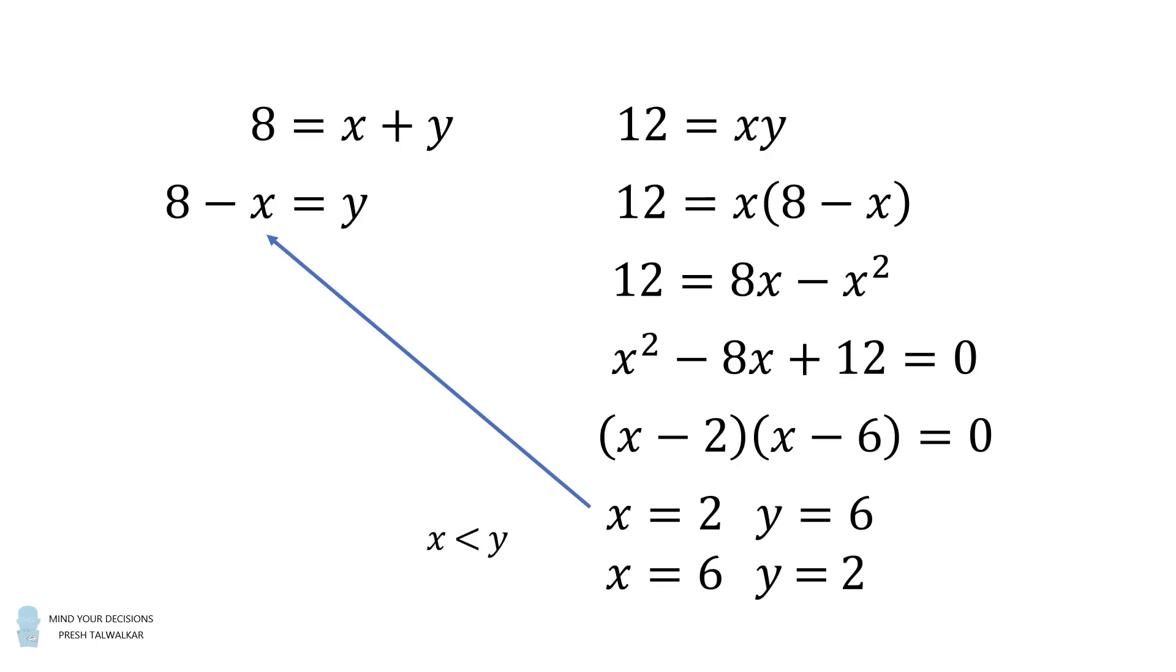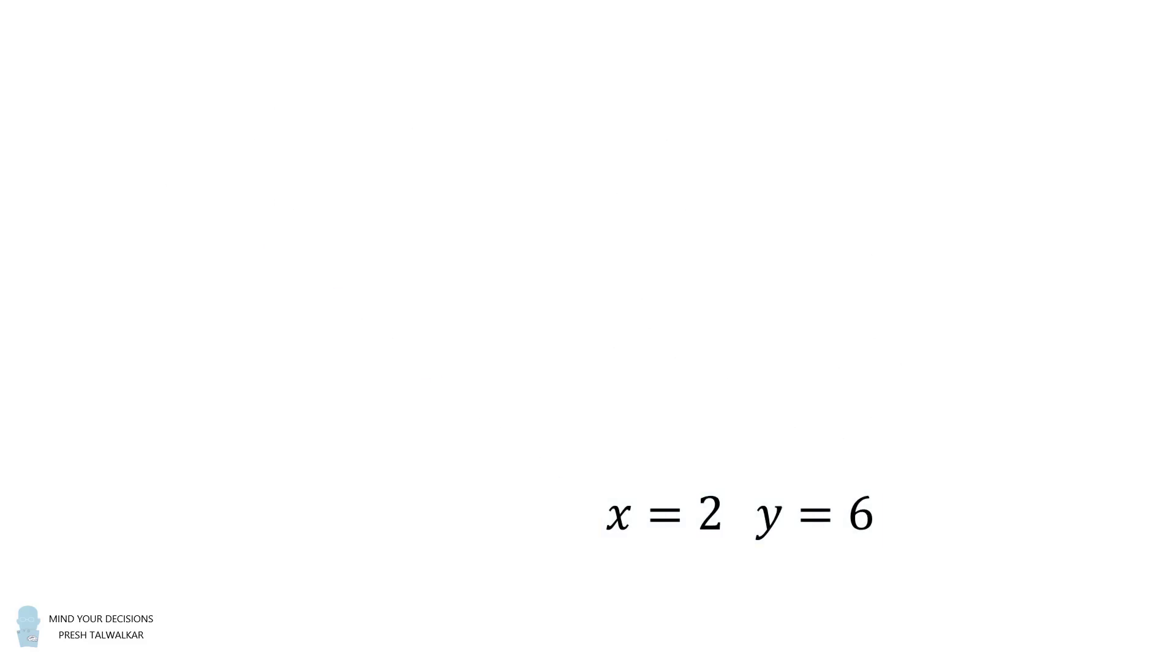But recall we want x to be less than y. So we'll just take the solution x is equal to 2 and y is equal to 6. From here, we just go back to our nested radical and we substitute in. The square root of 8 plus 4 times the square root of 3 is equal to the square root of x plus the square root of y, where x is equal to 2 and y is equal to 6. So this is equal to the square root of 2 plus the square root of 6. And that's approximately equal to 3.86. And that's the answer!